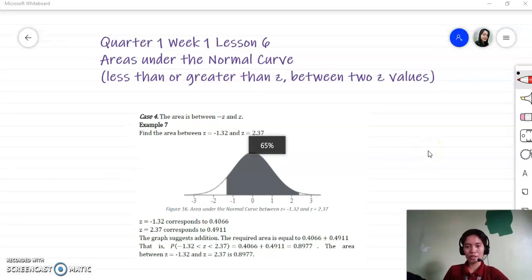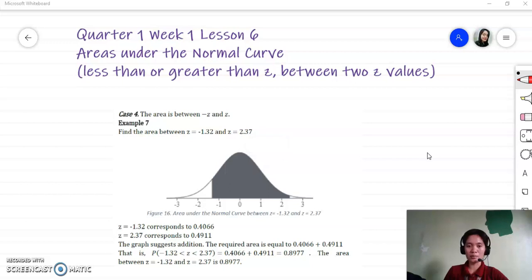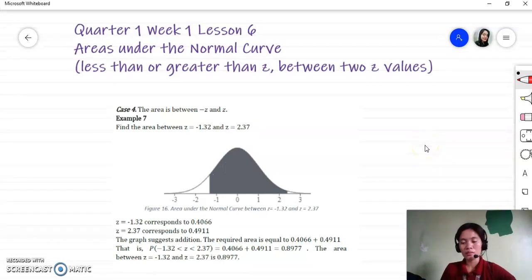Case number four: the area is between negative Z and positive Z. Now actually we already have the examples here, but I am still going to give another example.